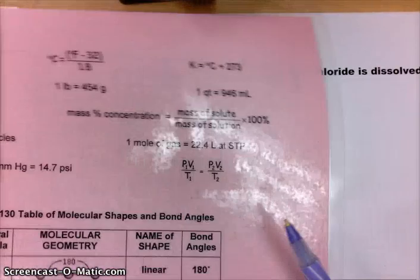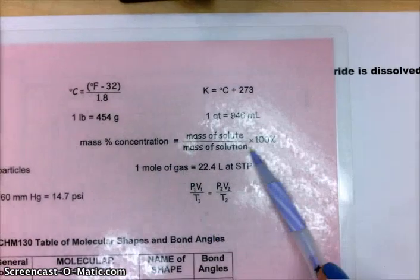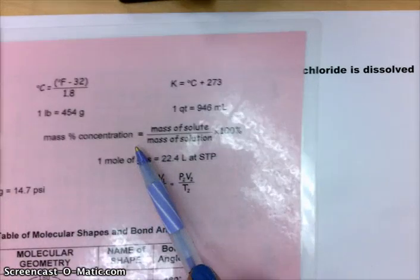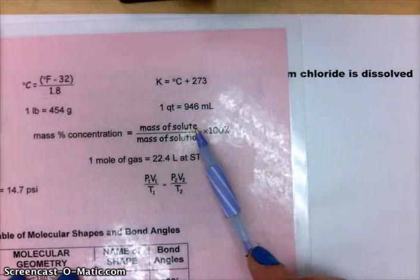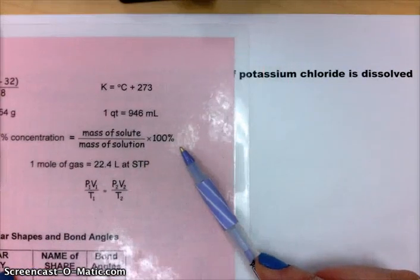So if we look at our table, we have an equation here that says mass percent concentration equals mass of solute over mass of solution times 100 percent.